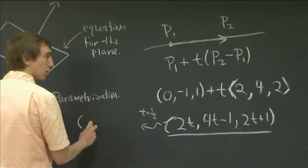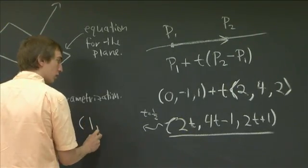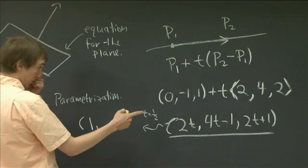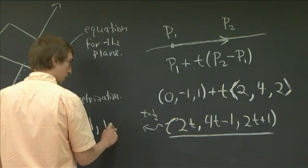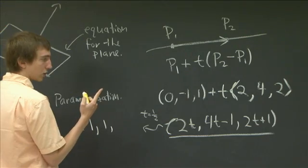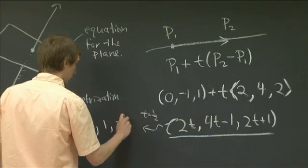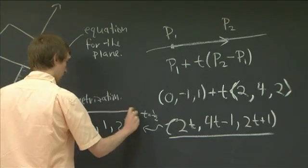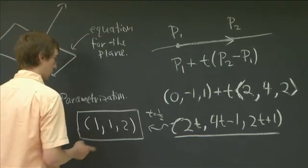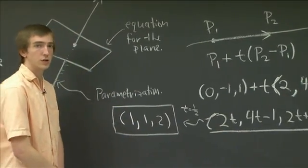We get 1, 2 minus 1 is 1, and 1 plus 1 is 2. So we get the point of intersection 1, 1, 2.